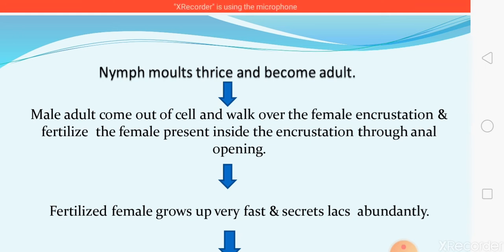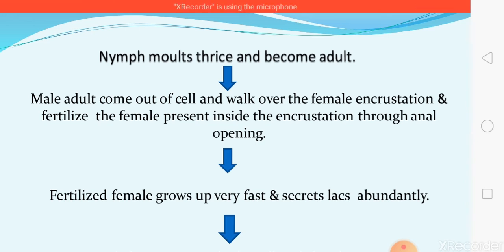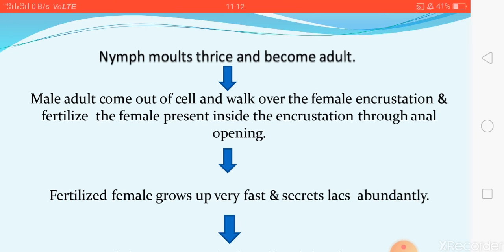Male adults may be winged or wingless, but after emergence they survive only three to four days before dying. After coming out of the incrustation, male adults walk over the female incrustation and fertilize the female inside the cell through the anal tubercular opening. The female remains inside the incrustation throughout her life, and fertilization occurs through the anal opening.